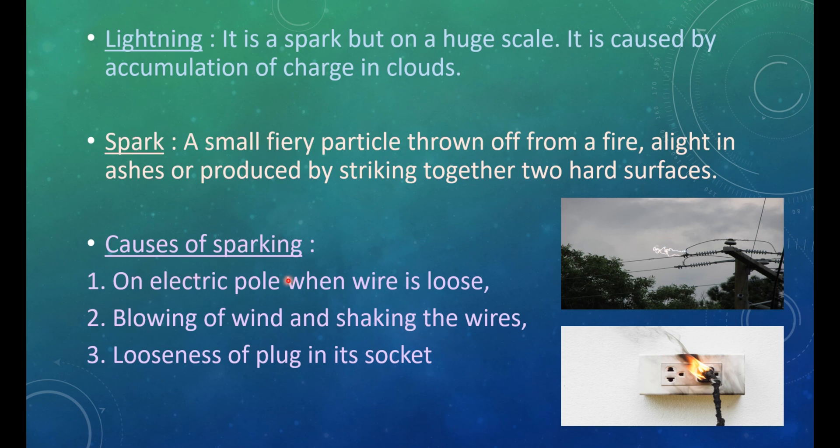Causes of sparking: on electric pole when wire is loose. When the wire is loose, we get a spark. Blowing of wind and shaking the wires. When the wires are loose and the wind is very fast or harsh, these wires are shaking and it makes the spark. Looseness of plug in its socket. When the plug is loose, we get a spark.